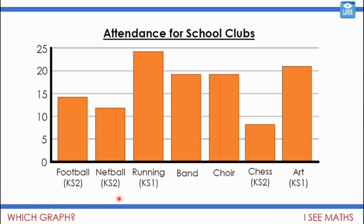Let's look at a few examples. If a school is looking at attendance for different school clubs — how many children go to each club — I would group that information into a bar graph so I can see the numbers going to each club. The information is in separate groups: you either go to football, netball, or running club. There's no in-between value, so we use a bar graph for these distinct groups.